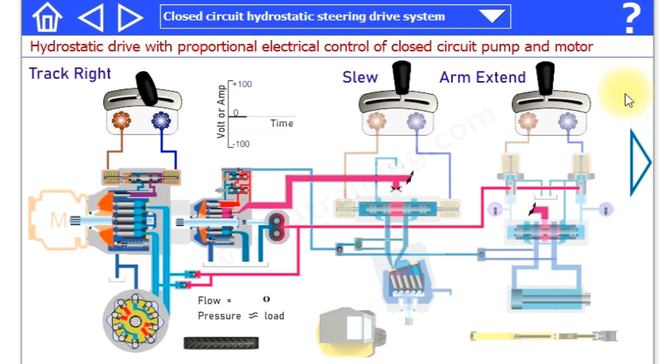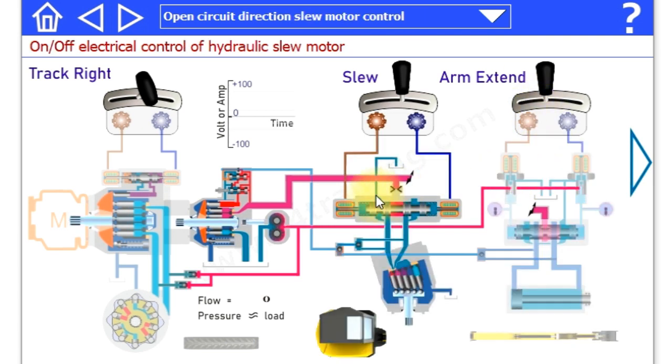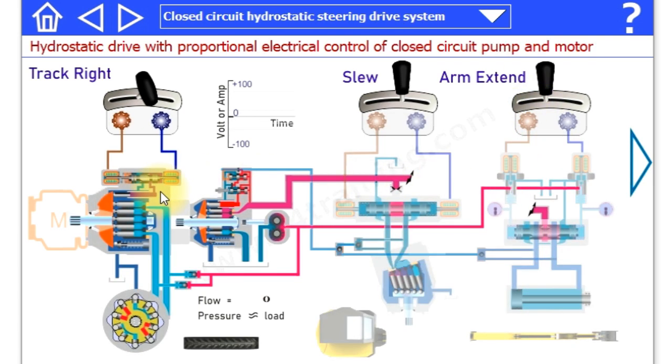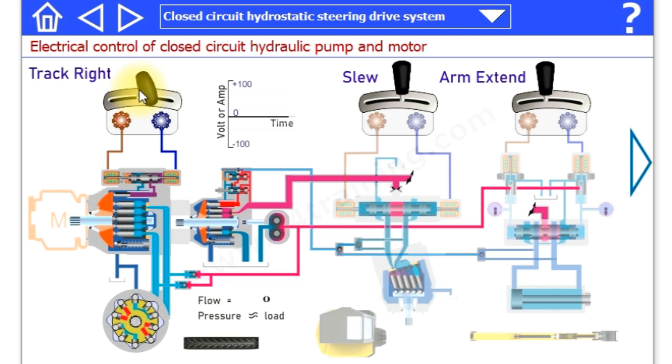Then we go through really to look at how these are all working. So what we've got here again is our arm or boom extend, our slew and our track drive. So this is a closed circuit hydrostatic drive system.